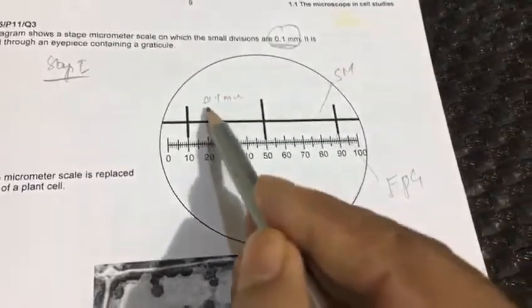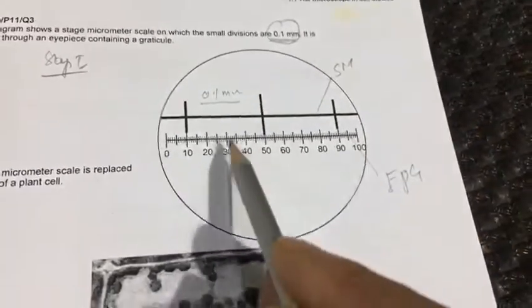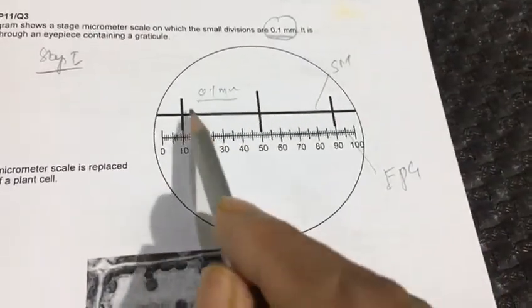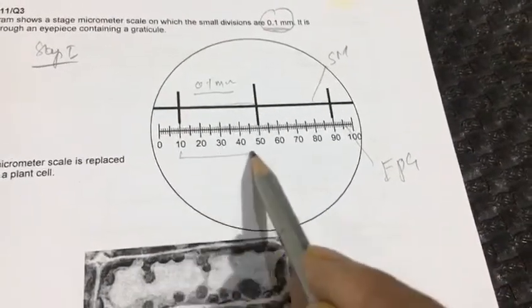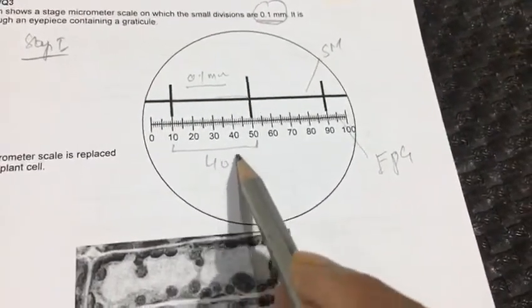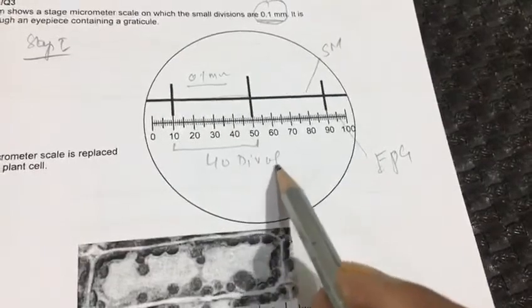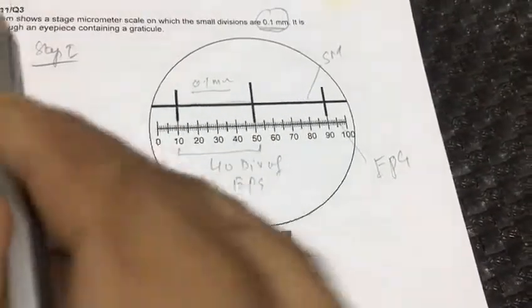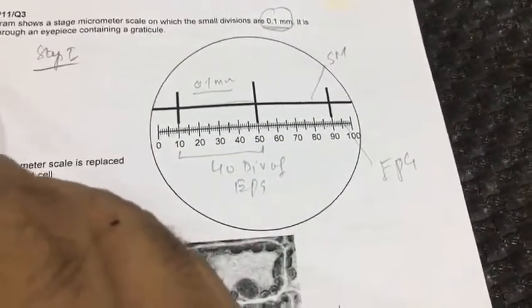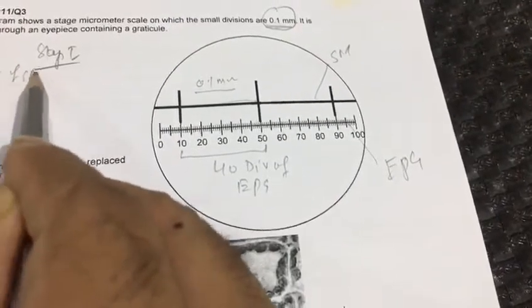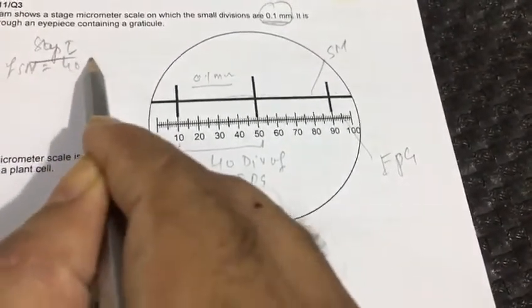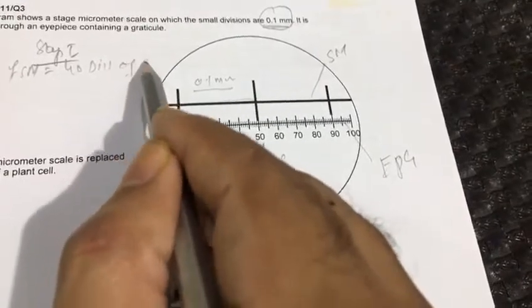I have taken this value 0.1 mm from here. And you see, 1 division of this SM is equal to 40 divisions of EPG. This means that if 1 division of SM is equal to 40 divisions of EPG...